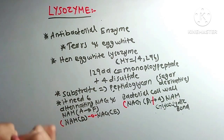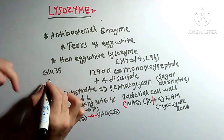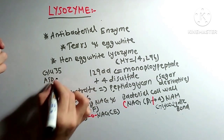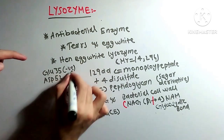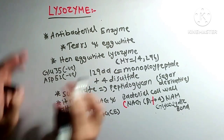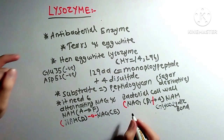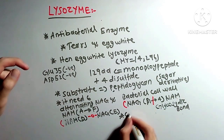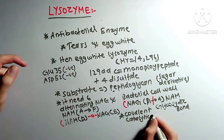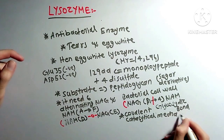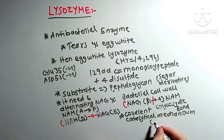Regarding the mechanism of this enzyme, there are two amino acids that are important: one is Glutamate 35, and the other is the acidic amino acid Aspartate 52. Both contain an acidic amino acid, meaning a negatively charged R-group. The mechanism of lysozyme is mostly based on covalent catalytic mechanism.